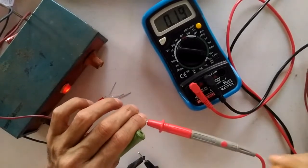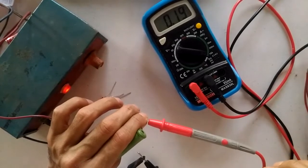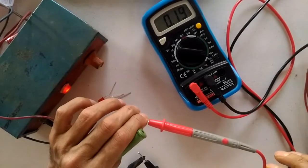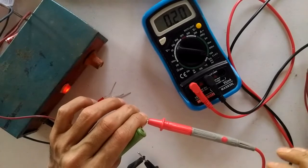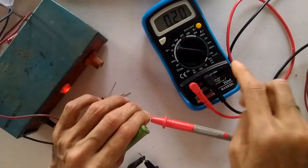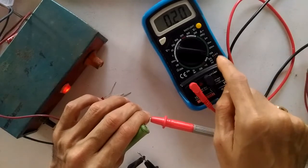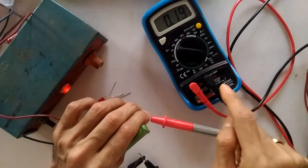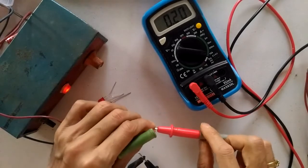It's almost 190 to 200 milliampere current which is flowing. Now you can see if I would have connected it on a lower range, it is almost ranging to that, which can be dangerous for your meter.